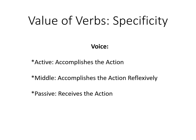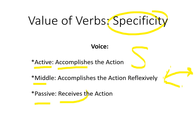We think about voice and the specificity of Greek verbs. In the active voice, the subject actually accomplishes the action. The middle has a reflexive kind of idea — the subject does the action but there's often a view to him or herself; it's reflexive, it comes back, there's some kind of self-interest. Or passive — the object receives the action; the subject receives the action in a passive verb. These are the basic ideas of Greek verbs, their value, and the specificity that they offer.